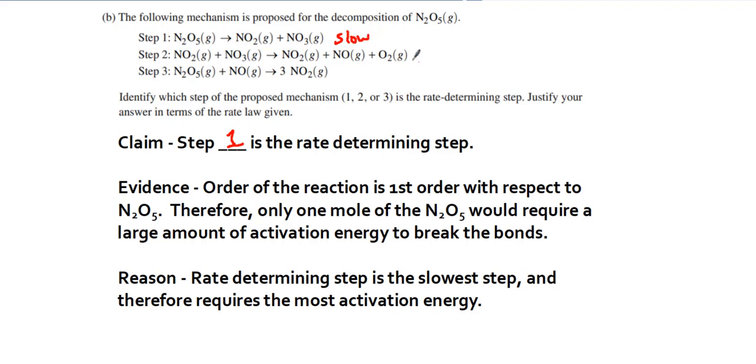That is the slowest step, which means these will be fast. They have some intermediates, and you can see we only require one mole of N2O5, which would mean that would be the slowest step. If step 2 was the slowest step, it would be one mole with respect to N2O5 and one mole with respect to NO3. But this claim, evidence, and reason suffices for everything.